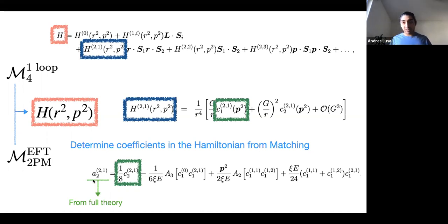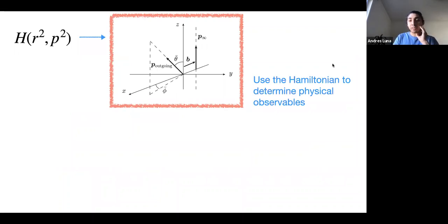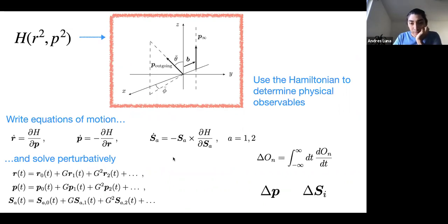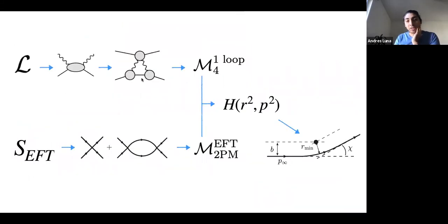The coefficients that appear in the Hamiltonian are determined by matching to the full theory — that is the information we extract — along with a set of iteration pieces. Now we have a Hamiltonian from which we can start determining physical observables in a scattering process. We write equations of motion, solve them perturbatively, and straightforwardly obtain our impulse and angular impulse. So: one-loop full-theory amplitude, one-loop EFT amplitude, match to Hamiltonian, get observables.